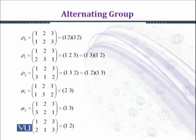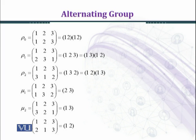Now we shall consider an example. We have rho0, rho1, rho2, mu1, mu2, mu3 as elements of the symmetric group S3. We shall write the identity permutation in the form (1,2; 1,2), and we can see that the identity permutation is an even permutation, so rho0 is an even permutation.